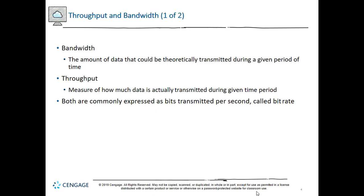Throughput — also called the payload rate or effective data rate — is a measure of how much data is actually transmitted over a given period of time. In the highway analogy, throughput is the actual traffic passing in one minute. Using all available bandwidth results in more accidents and traffic jams. As a technician: bandwidth is measured in megahertz, throughput is the actual data traveling across the circuit — for example, Cat6 cable has 550 MHz bandwidth, while its throughput might be gigabit.